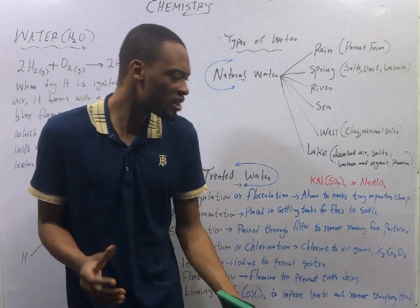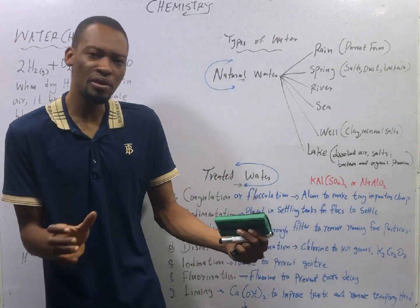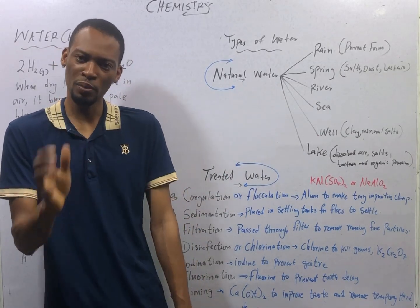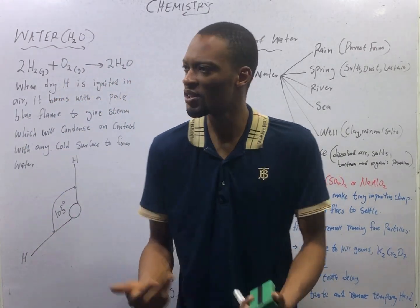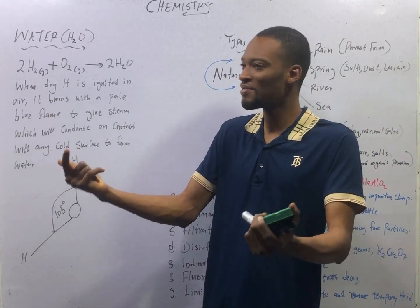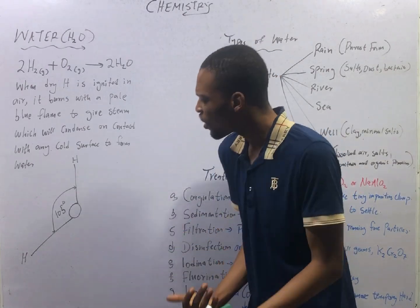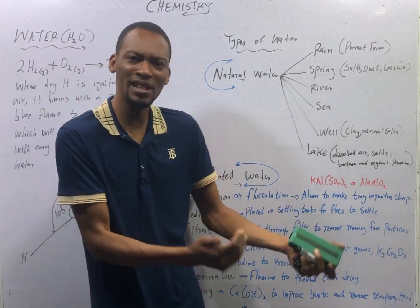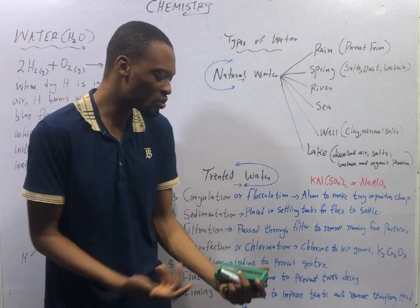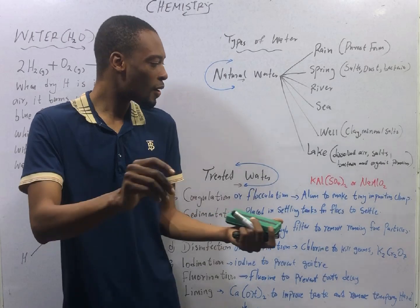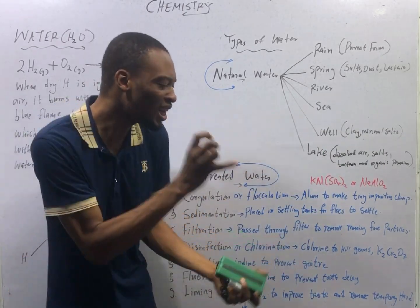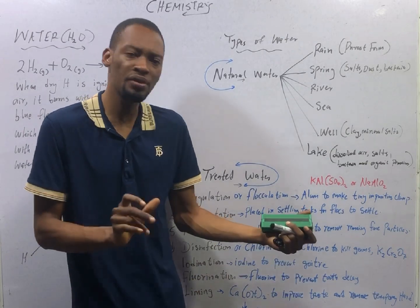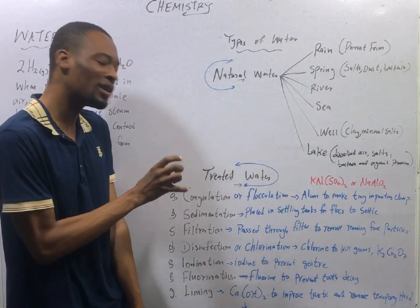Coagulation or flocculation is the use of alum to make tiny impurities clump together. Alums are double salts. When the hydrogen ions present in an acid are partially or totally replaced by a metal, salts are formed — giving rise to normal salt, acid salt, basic salt, and double salt. Potassium alum or sodium aluminate are used to make tiny impurities of water coagulate together — that is coagulation or flocculation.